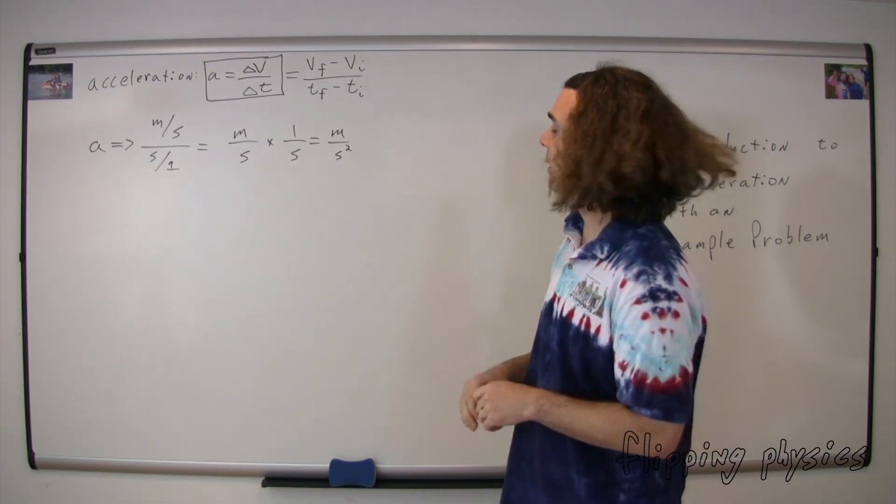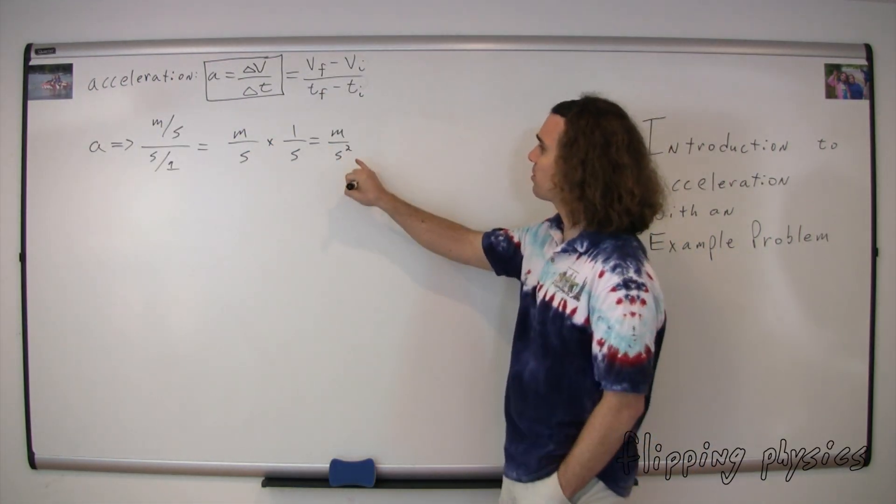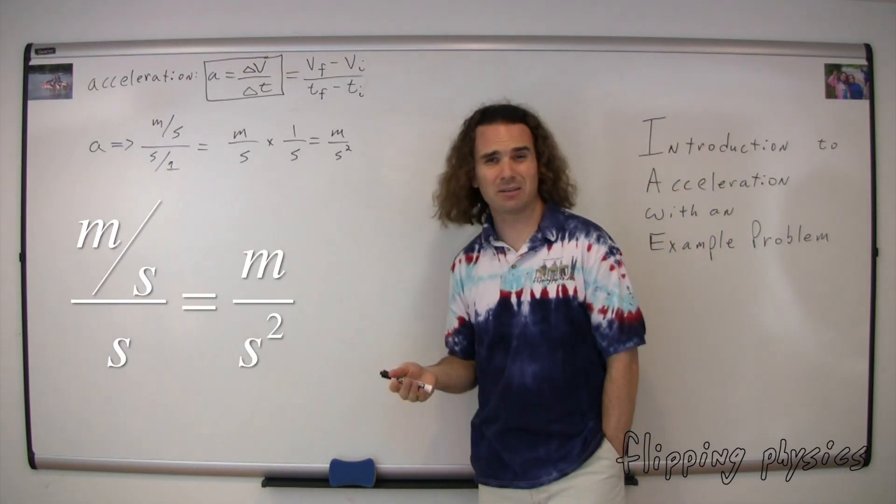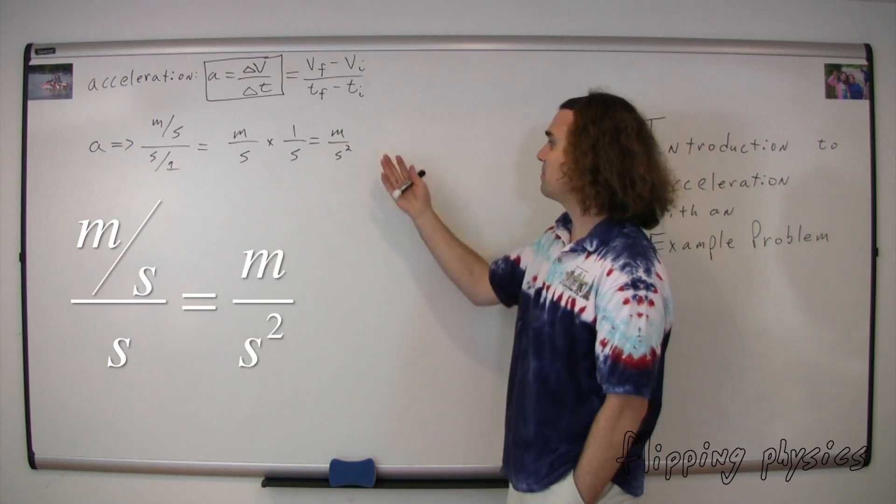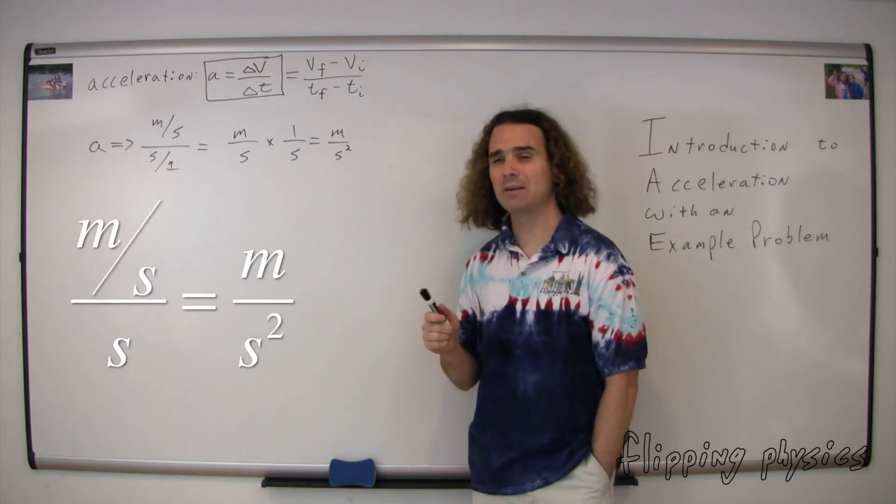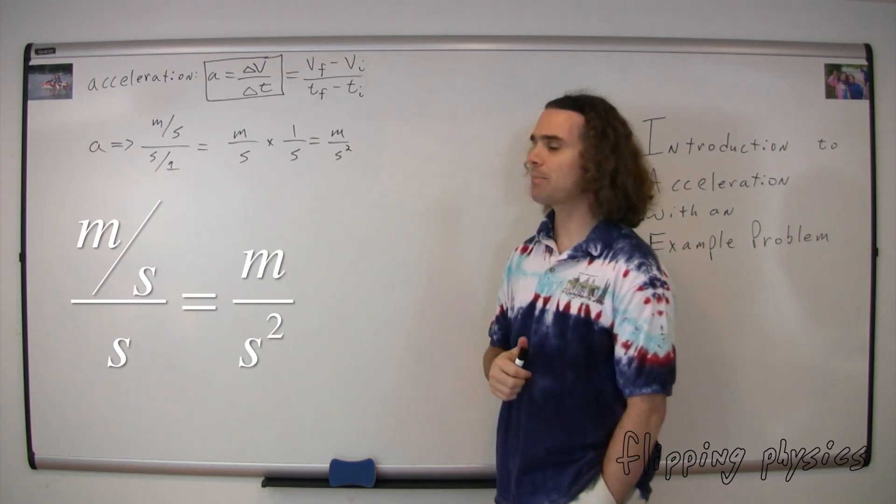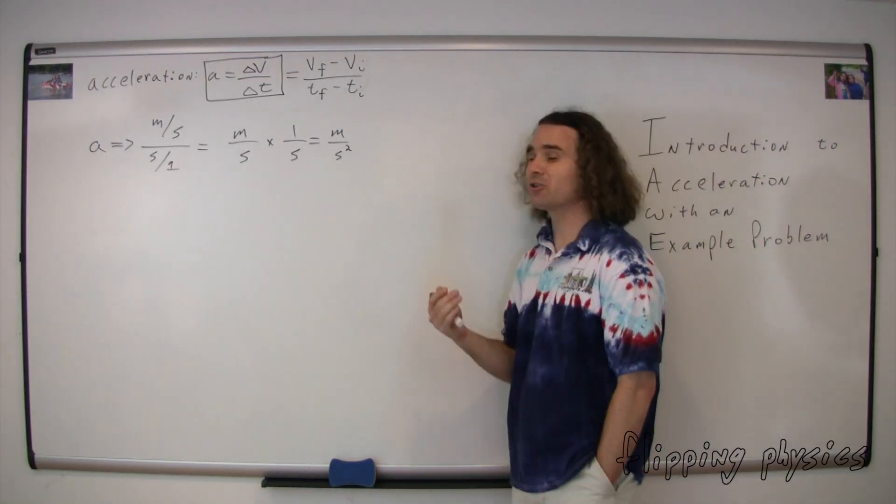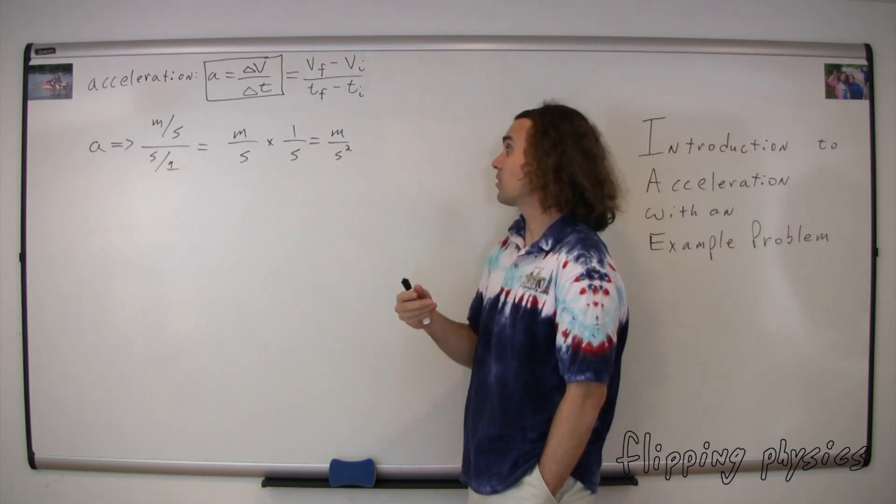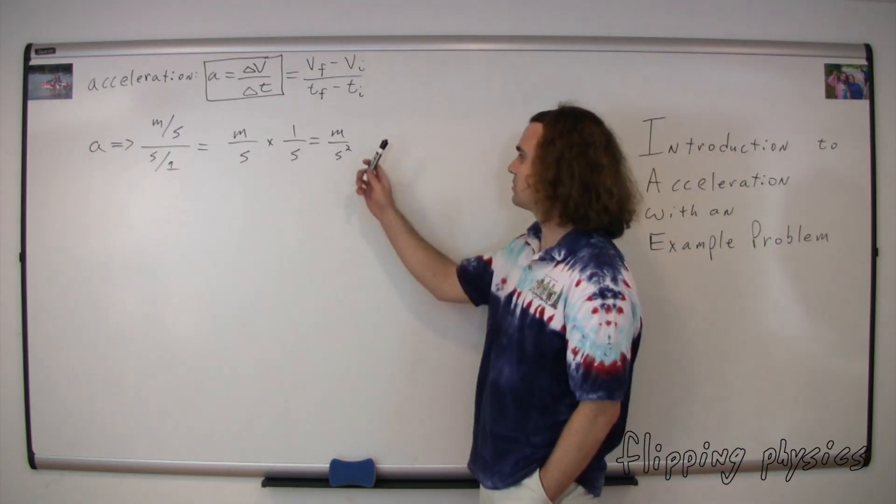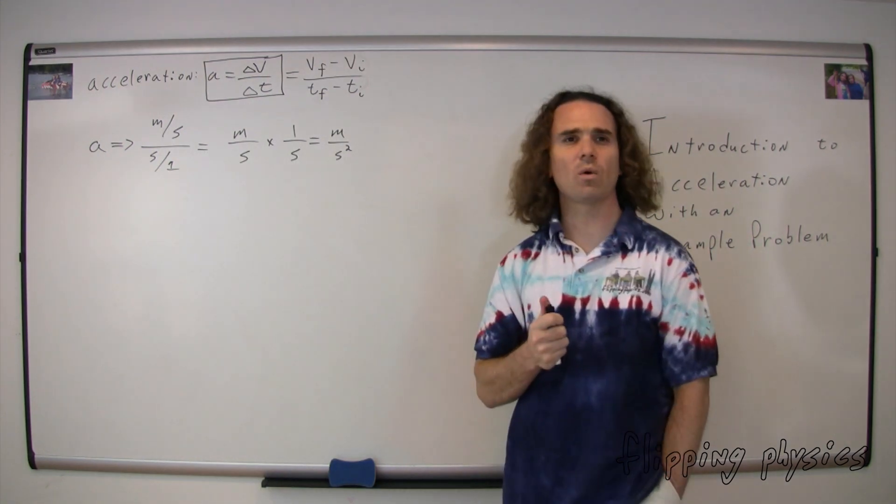Exactly right. Acceleration works out to be in meters per second squared. Some people like to call it meters per second per second. I myself prefer meters per second squared. Both are correct. They're the same thing. But again, I prefer meters per second squared. Also, we could have kilometers per hour squared or furlongs per fortnight squared. But usually we see it in base SI dimensions which works out to be meters per second squared.